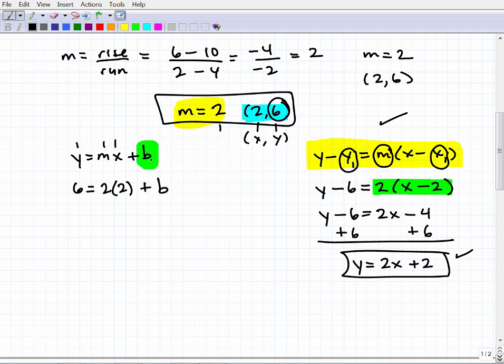Now be very careful because this b can look like a 6. I've seen thousands of mistakes where students confuse this because the b, this little small b can definitely look like 6 if you're not careful. All right. So let's solve for b. This is going to be 6 equals 4. 2 times 2 is 4 plus b. Now I subtract 4 from both sides. So 2 is equal to b. So this is our y-intercept.